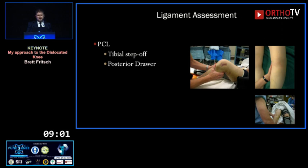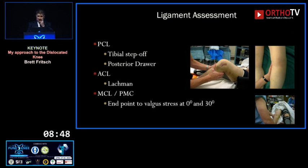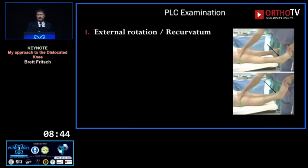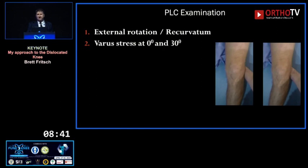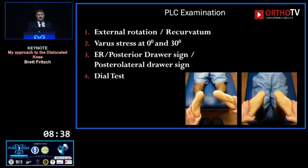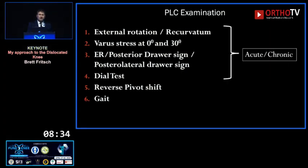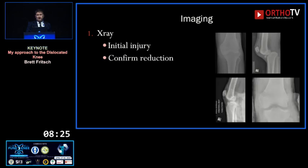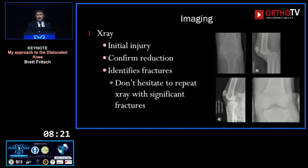The PCL is the centre of the knee — reduce it, because you can feel it with an external measure: the medial tibiofemoral step-off in neutral rotation. Everything gets assessed from there, otherwise you'll get false positives and false negatives. The ACL: simple Lachman. MCL and posterolateral corner: stress at 0 and 30 degrees. For the posterolateral corner there's a host of tests — external rotation recurvatum, varus stress at 0 and 30, posterior drawer, posterolateral drawer, dial test, reverse pivot, and gait. The first four are usable in acute and chronic settings; the last two are really only applicable in the chronic setting.